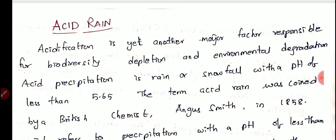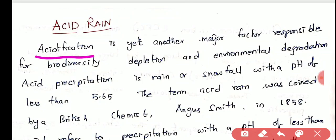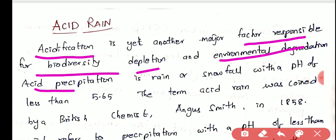Acid rain is a terminology, but the actual phenomenon is acidification. So if you know about acidification, you will come to know about acid rain. Acidification is yet another major factor responsible for biodiversity depletion and environment degradation. Due to the acidification of biodiversity, biodiversity depletes and it causes environment degradation.